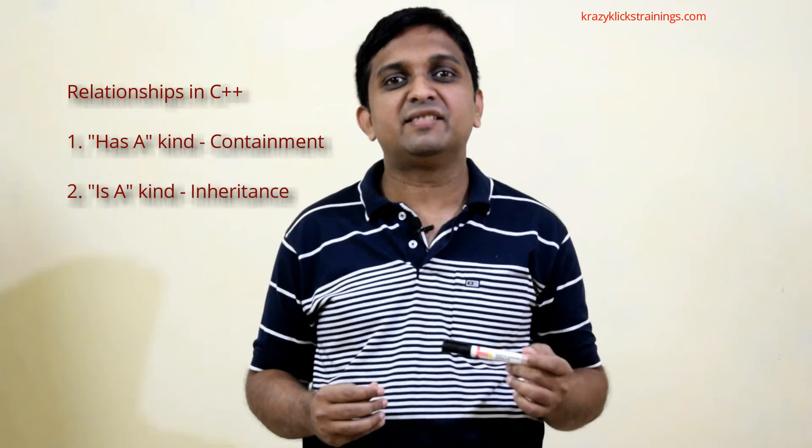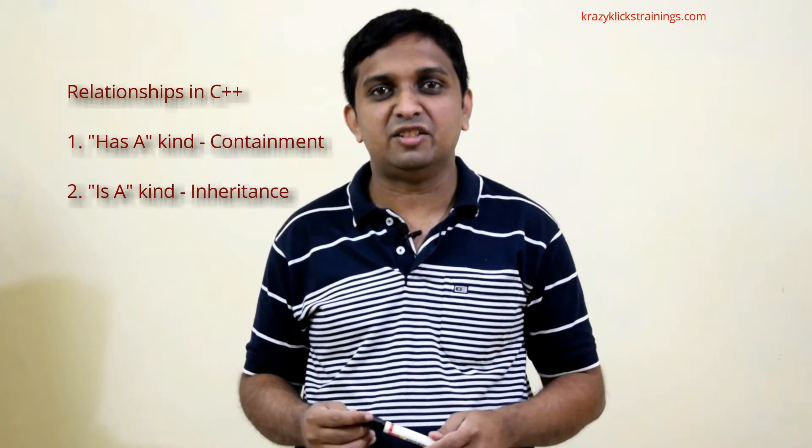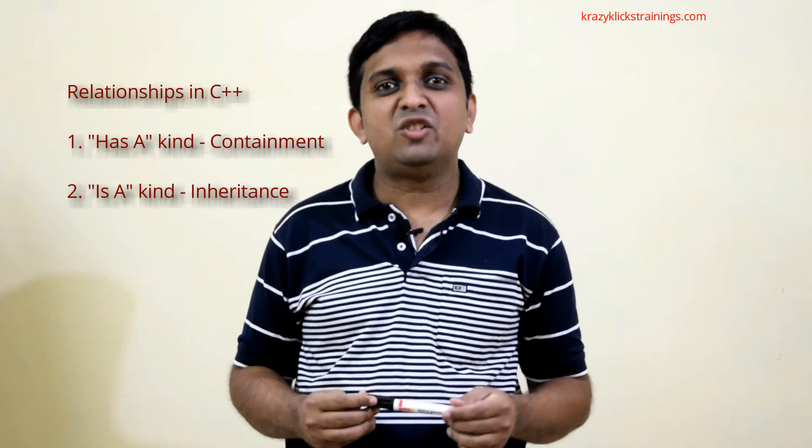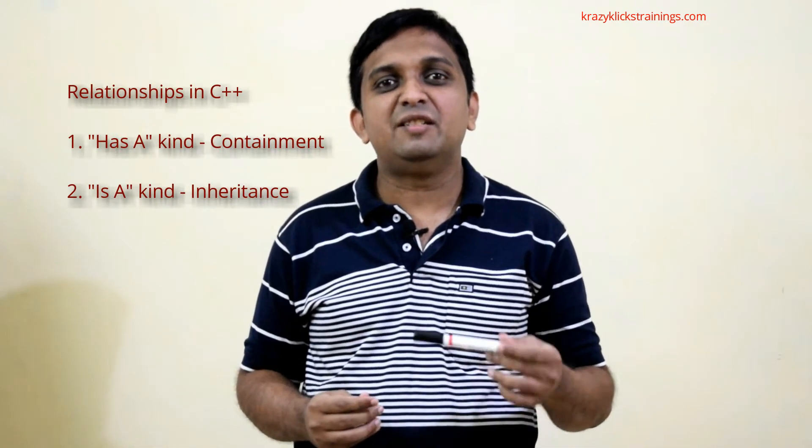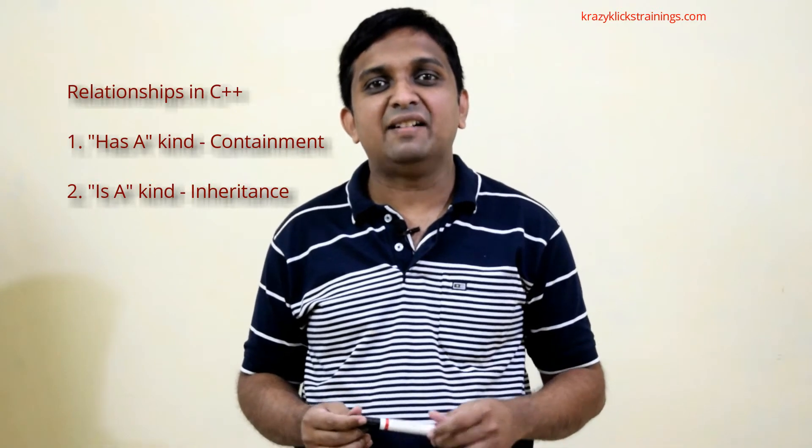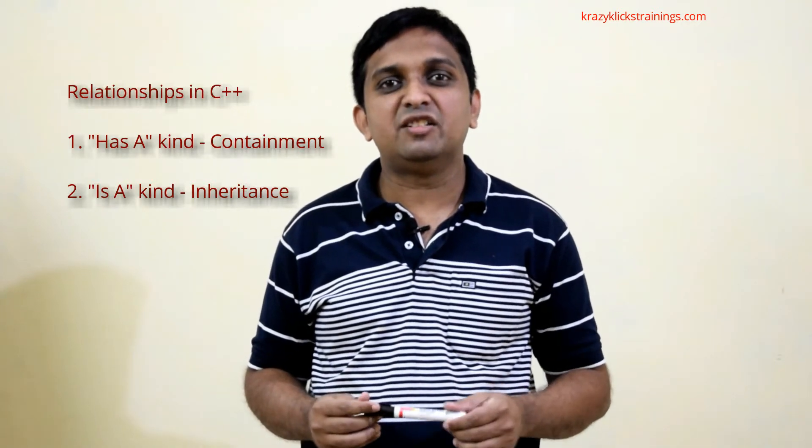There are two types of relationships in C++ between different classes. One is called the 'has-a' kind of relationship and the other is called the 'is-a' kind of relationship. The 'has-a' relationship is implemented using containment, and the 'is-a' relationship is implemented using inheritance.